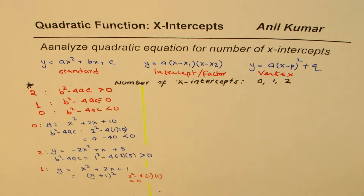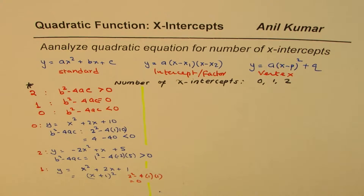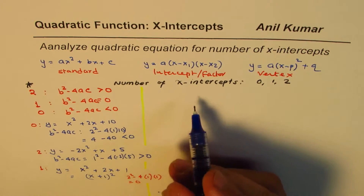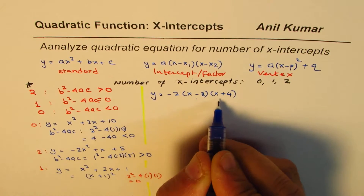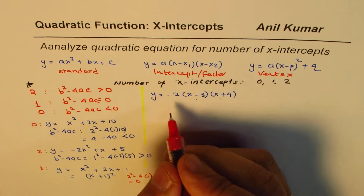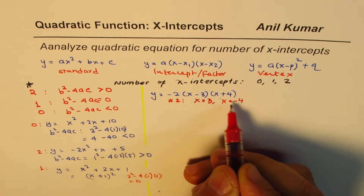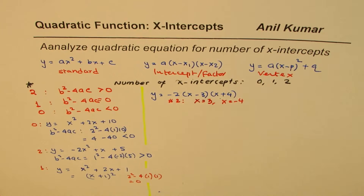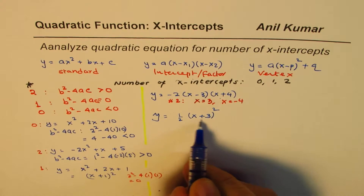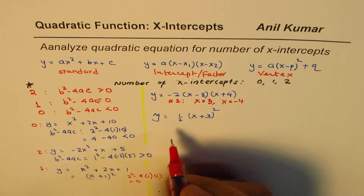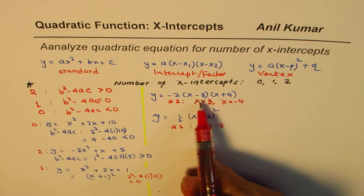That is the maximum work you have to do when given standard form. For the other two forms it's much easier. In intercept form, for example y = -2(x - 3)(x + 4), we clearly have 2 x-intercepts at x = 3 and x = -4. In vertex form, y = ½(x + 3)² has only one x-intercept at x = -3.